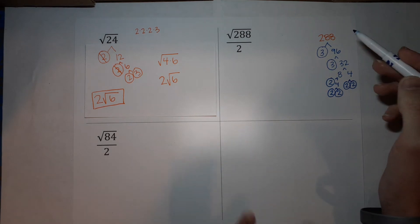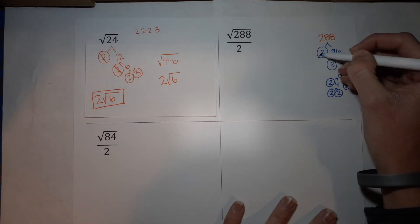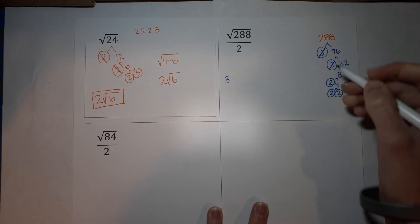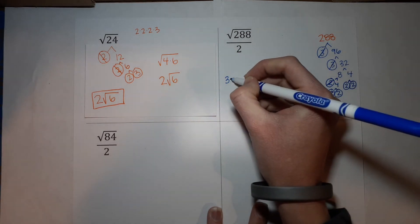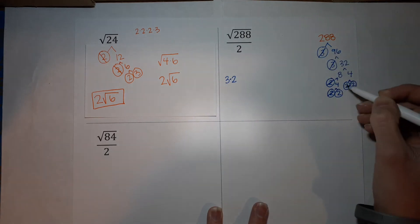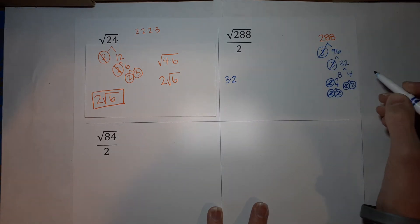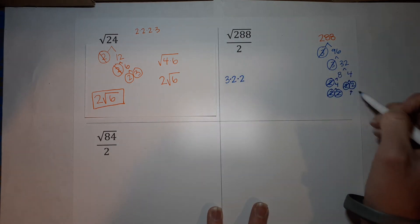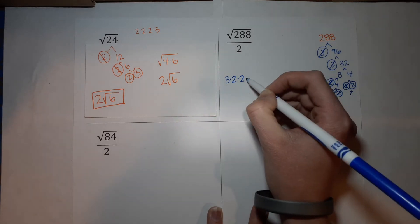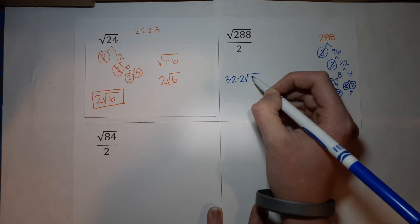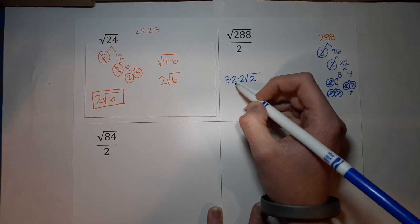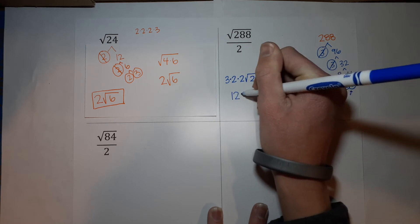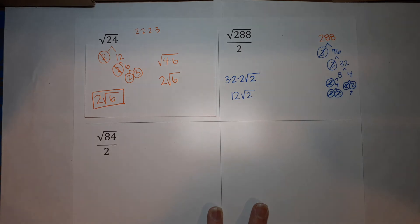Now I pull out any pairs that I can. There are two 3s, so I can pull a 3 onto the outside of the radical. There are two 2s, so I can pull a 2 on the outside — those are being multiplied. And there's another pair of 2s, so I can pull out another 2. What is still left is one 2, so under my square root there's still going to be a 2.